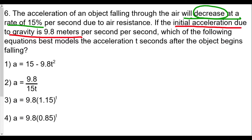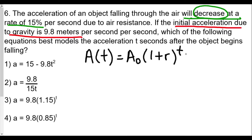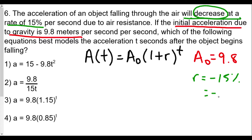We go back to our model: a(t) = a₀ × (1 + r)^t, where a(t) is the acceleration after t seconds and a₀ is the initial acceleration. Here a₀ = 9.8, and because the acceleration is decreasing, the rate r = −15% = −0.15.